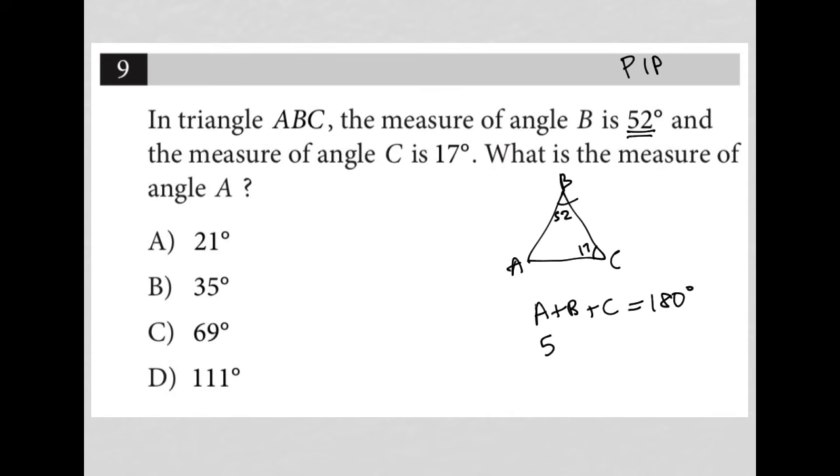So knowing that I have 52 and 17 and that I don't know what A is, so A plus that. So 52 plus 17 is 69, so A plus 69 equals 180. I can then subtract 69 from both sides here. 69 is crossed out, and I'm left with A is equal to, what's that?